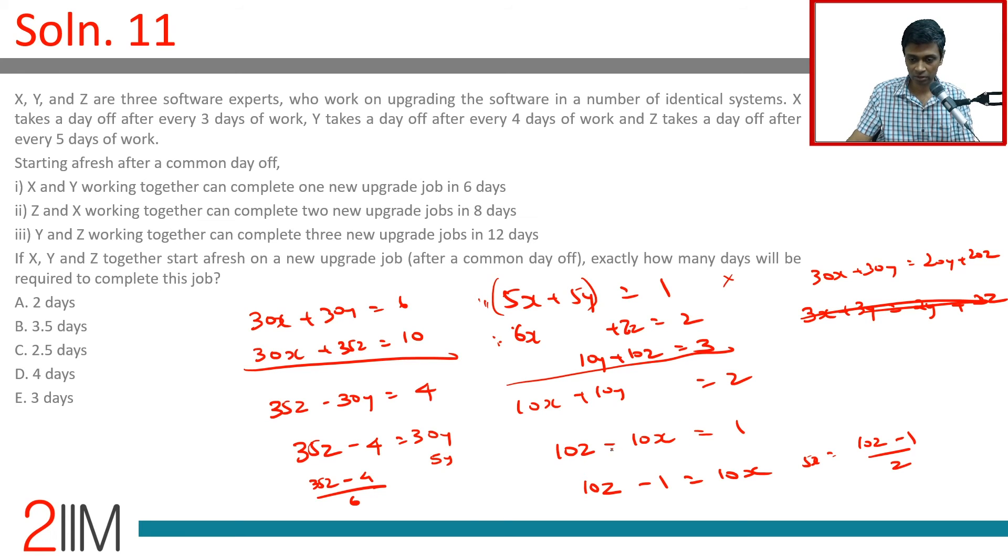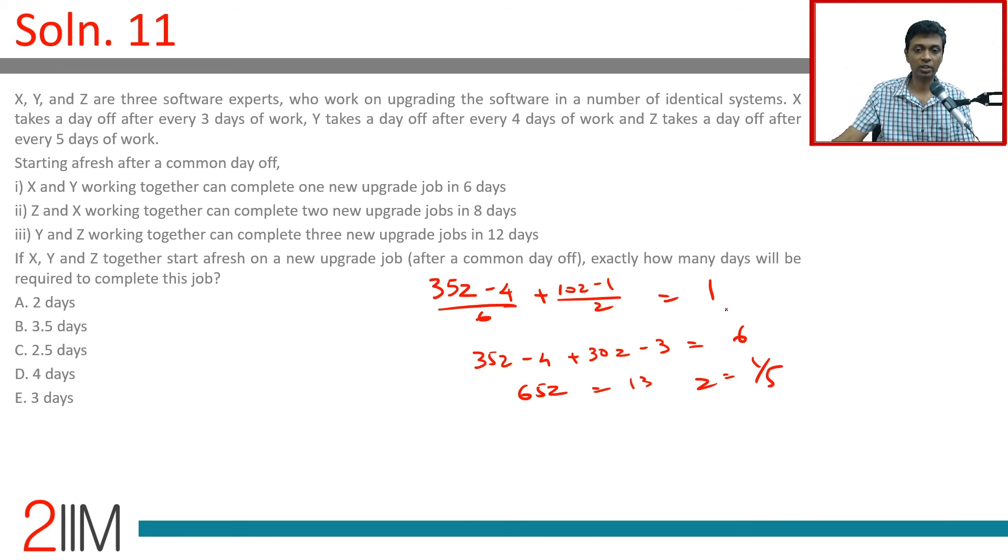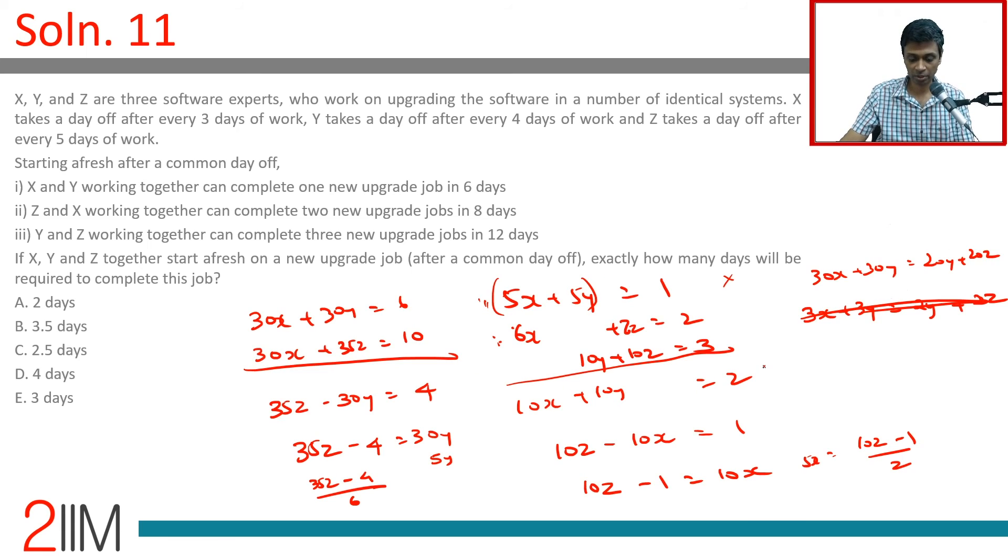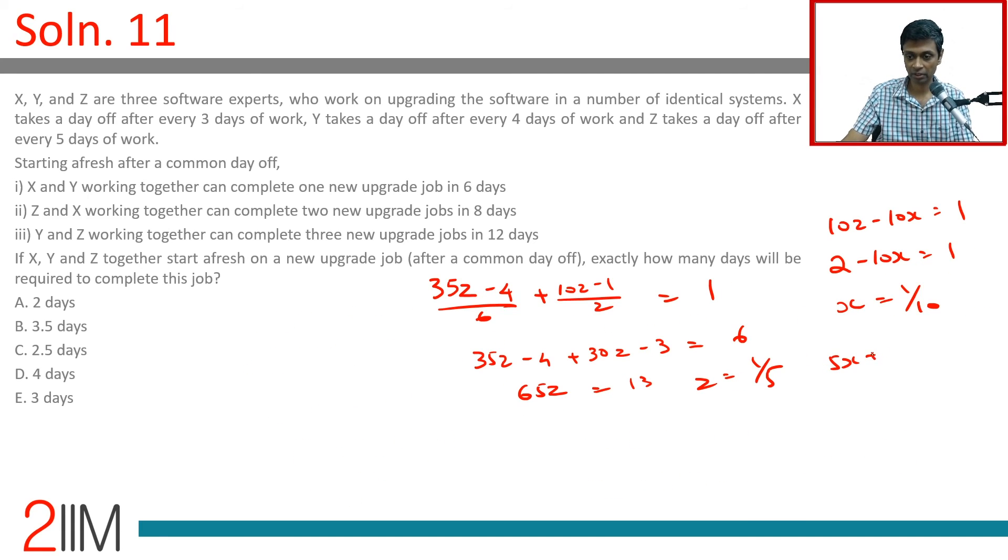10 Z minus 10 X is 1. Let's plug it in. 10 into 1 by 5 is 2. 2 minus 10 X is 1, or X is 1 by 10. We know 5 X plus 5 Y is 1.